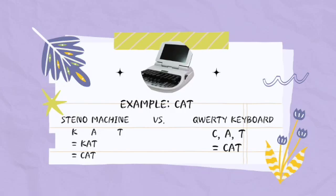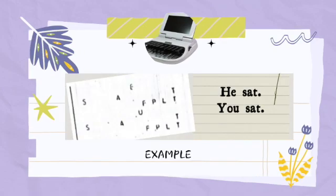On the QWERTY keyboard, you press C first, then A, then T to make the word 'cat' — that is three separate strokes. So compared to the steno machine keyboard which requires only one stroke, the QWERTY keyboard requires three strokes for the same word. That is one of the beauties of machine shorthand or shorthand writing.